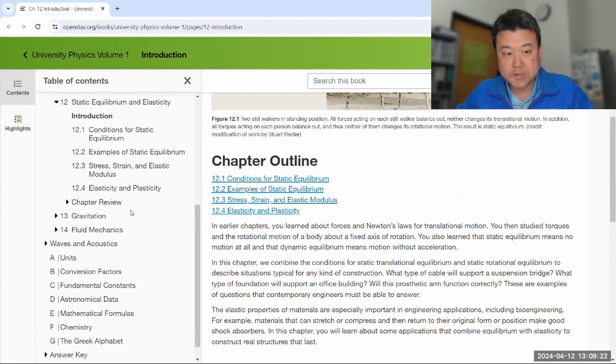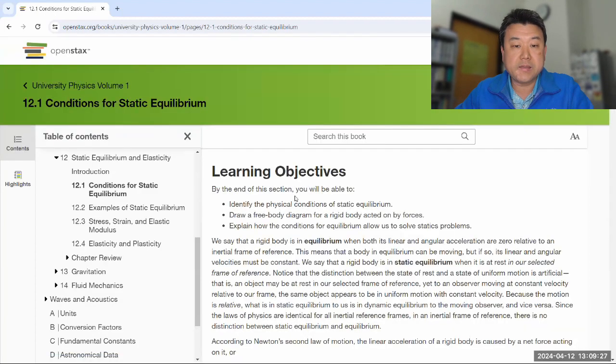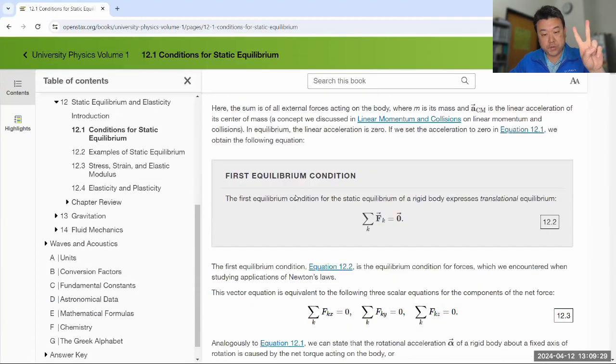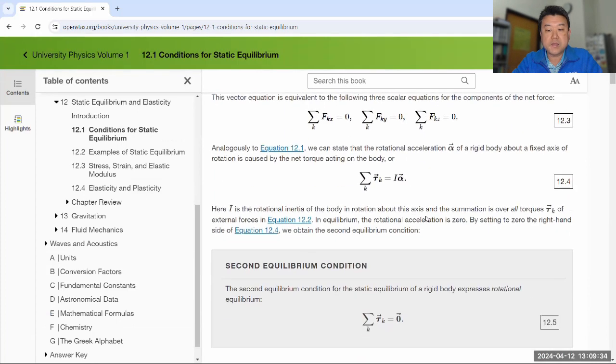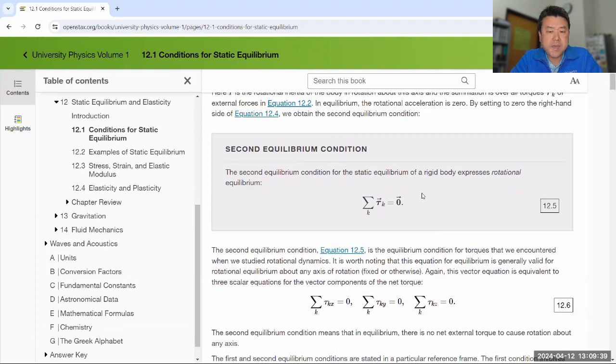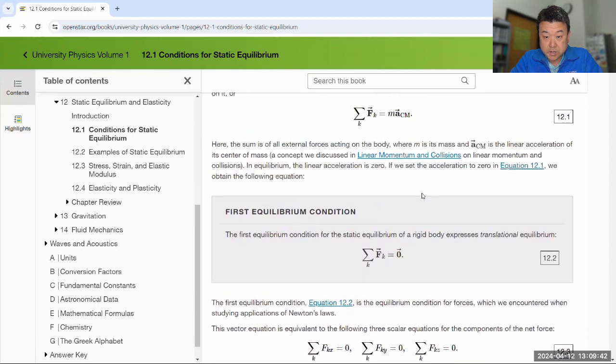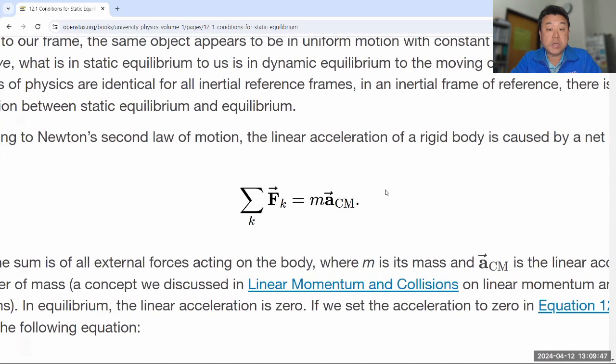Chapter 12 starts out with section 12.1 conditions for static equilibrium and these are simple two conditions. The first condition says that the net force is equal to zero and the second condition says net torque is equal to zero and these conditions are meant so that any acceleration due to net force is zero. I think we might have talked about dynamic equilibrium versus static equilibrium. The focus of this chapter will be static equilibrium.